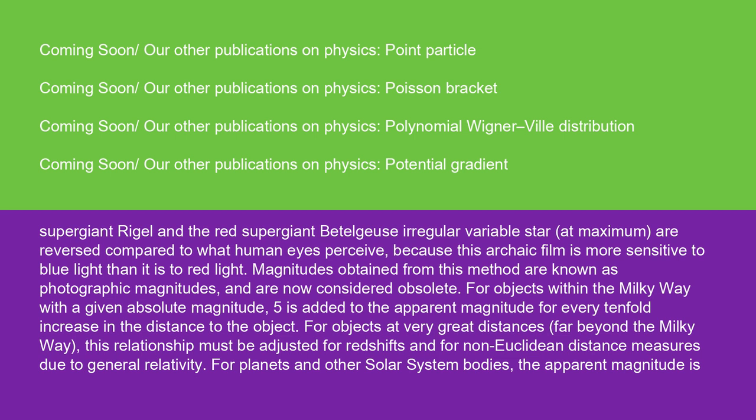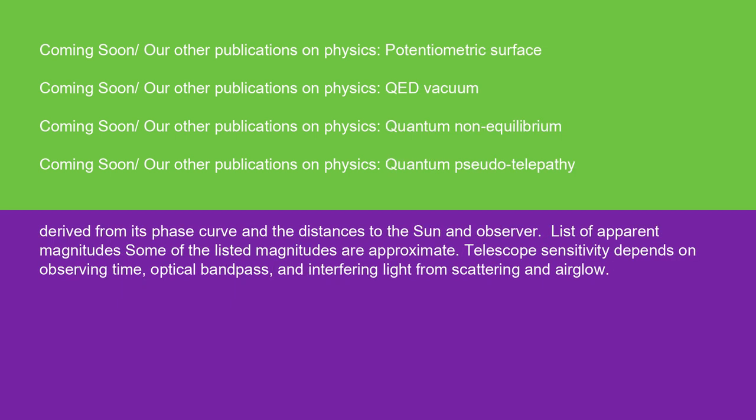For objects within the Milky Way with a given absolute magnitude, 5 is added to the apparent magnitude for every tenfold increase in the distance to the object. For objects at very great distances (far beyond the Milky Way), this relationship must be adjusted for redshifts and for non-Euclidean distance measures due to general relativity. For planets and other solar system bodies, the apparent magnitude is derived from its phase curve and the distances to the sun and observer.